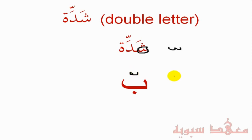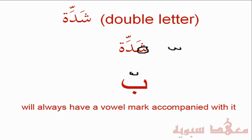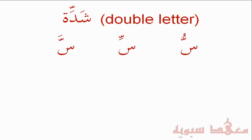A point to note is that the Shaddah will always have a vowel mark accompanied with it — either the Fathah, the Dhammah, or the Kasrah. So for example, we have here three Seens with a Shaddah and the three different Harekat: the Shaddah with the Dhammah, the Shaddah with the Kasrah, and the Shaddah with the Fathah.